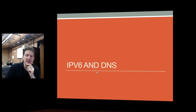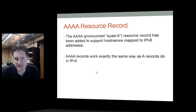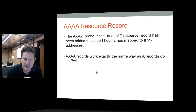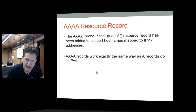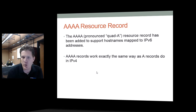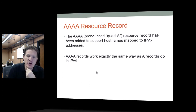IPv6 and DNS: DNS has been extended to support IPv6. A new record called Quad-A (AAAA) has been added to support IPv6 host names. The pointer resource record has also been updated for reverse lookups from IP to name. Other record types like MX, CNAME, and NS have not changed, but they all support both A and AAAA host names. AAAA records work exactly the same way as A records did in IPv4 — you request what the IP address is for a hostname, and the DNS server replies with the address.